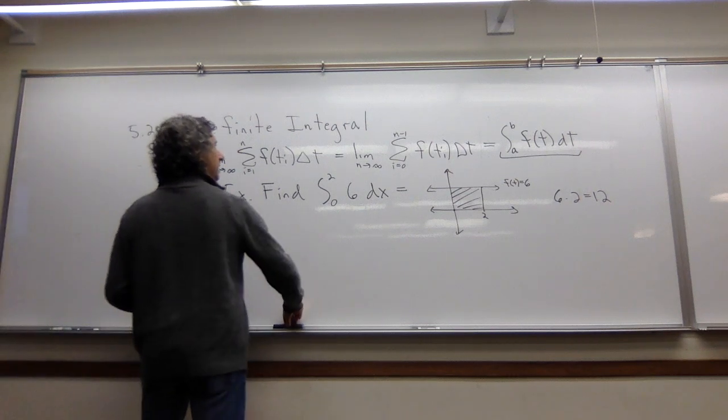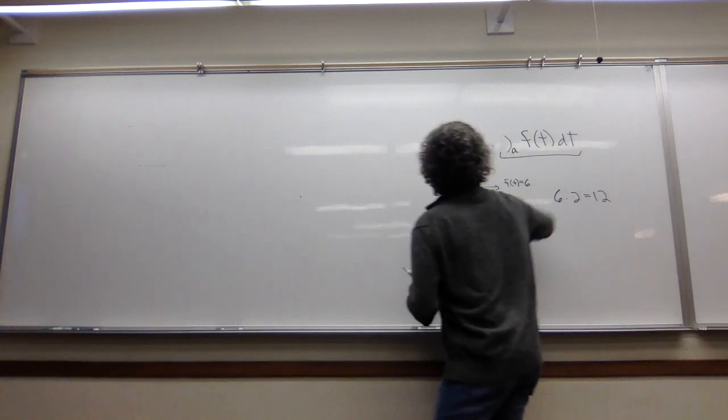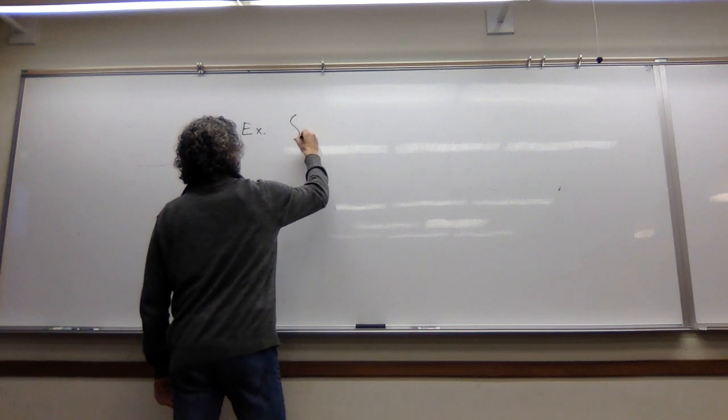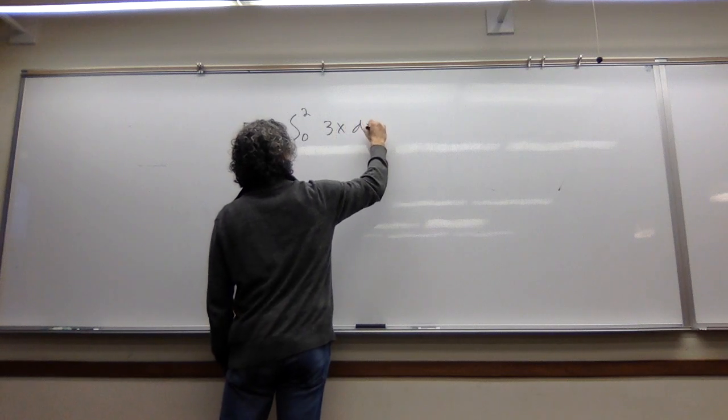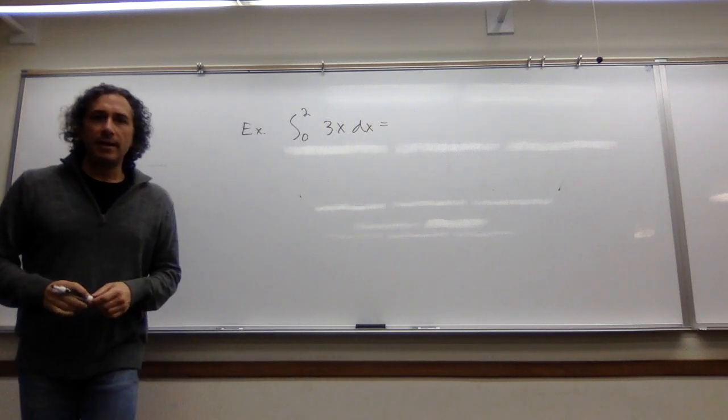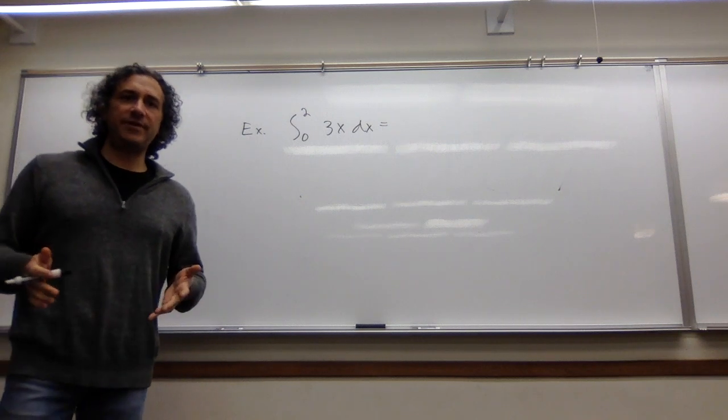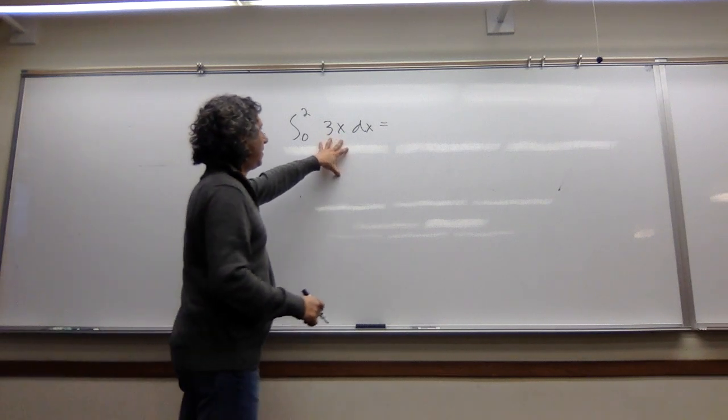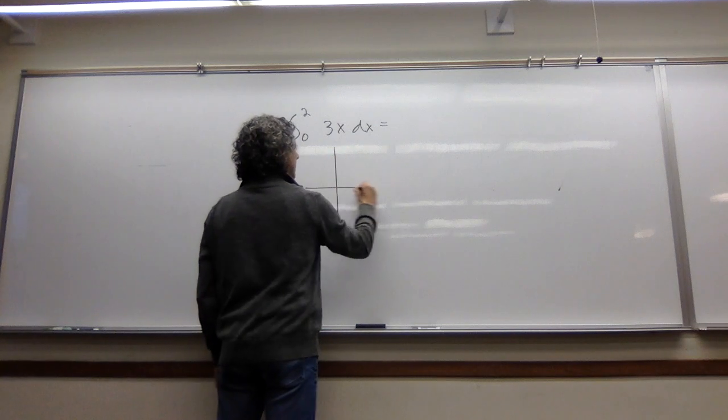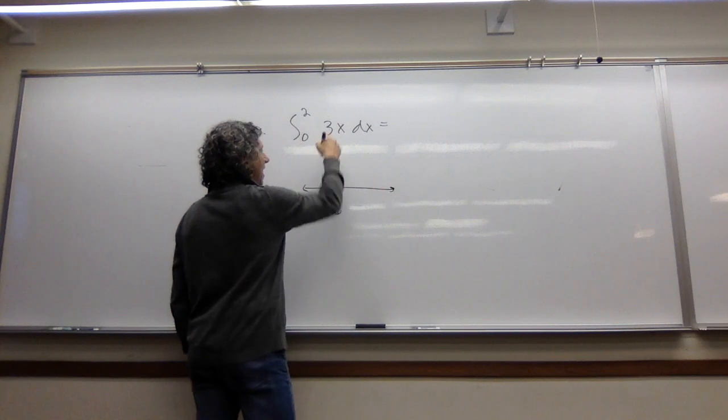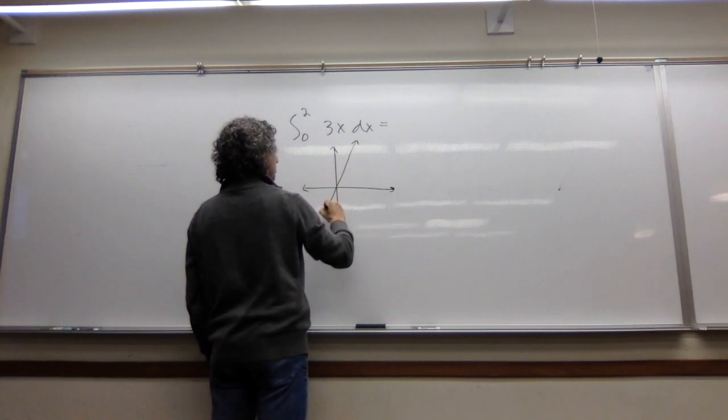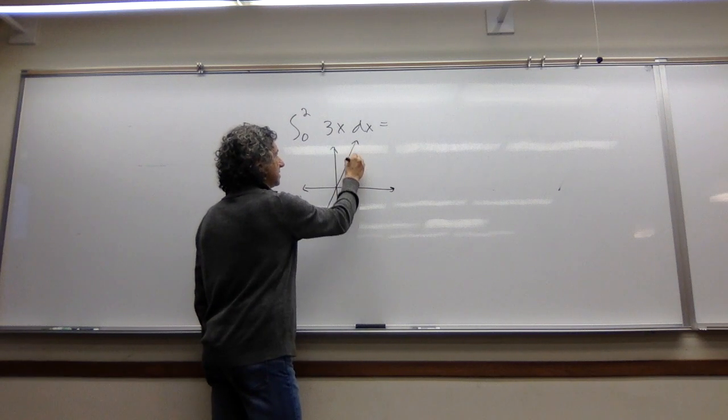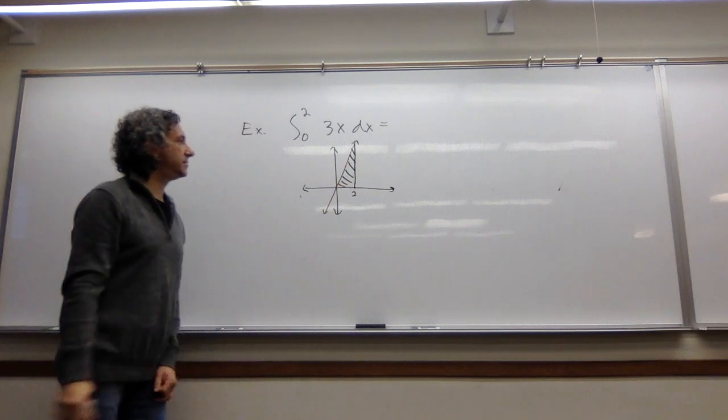Let's try one that's a little bit more challenging. Let's try the integral from 0 to 2 of 3x dx. Again, I invite you to give this a shot. Pause the video before looking at the solution. Here's the solution. Same deal. This is asking to find the area under f of x equals 3x. So that's just a linear function through the origin from 0 to 2. So it's asking for the area represented by the shaded region.